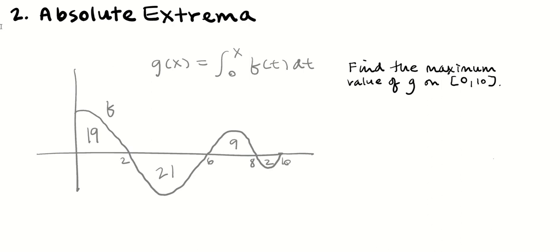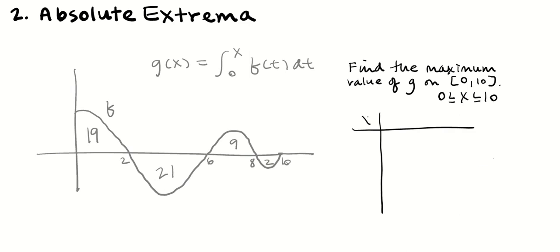Absolute extrema — something that came up on a recent test where a lot of us got the answer but didn't get all the justification points. If they ask us to find the maximum value on a closed interval, we need to run the candidates test — the closed interval test. That's where we evaluate the function at the endpoints. So I'm going to evaluate g(x), where g(x) equals the integral from 0 to x of f(t) dt, at the endpoints. g(0) is 0, and g(10) is 19 minus 21 plus 9 minus 2, which equals 5.